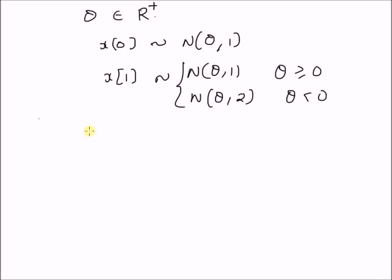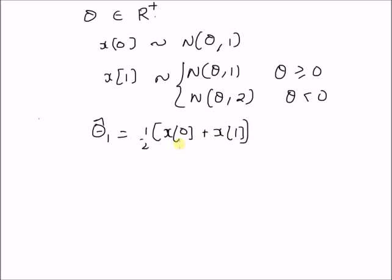Now, given two estimators defined as follows: theta-hat₁ is equal to (1/2)(x₀ + x₁), that is the average of the two observations, and we have another estimator theta-hat₂ which is a weighted sum given by (1/3)(2x₀ + x₁).